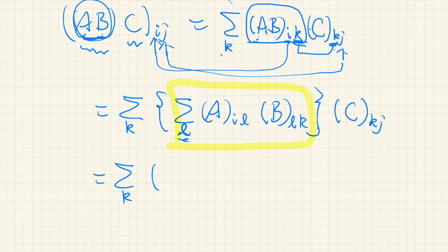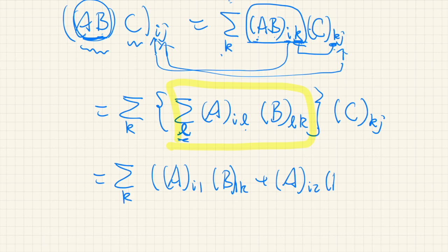It's just a summation. If we expand this, L varies from one to something, so it will be A_{I1} times B_{1K}, plus A_{I2} times B_{2K}, and so on, times everything times C_{KJ}.